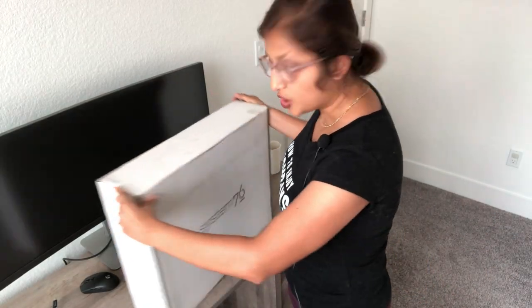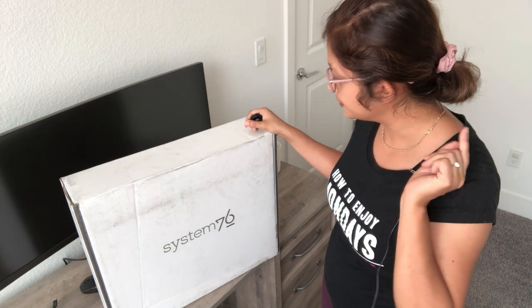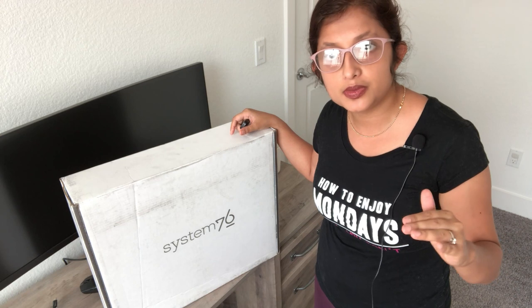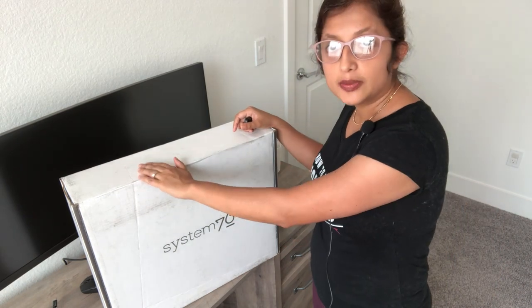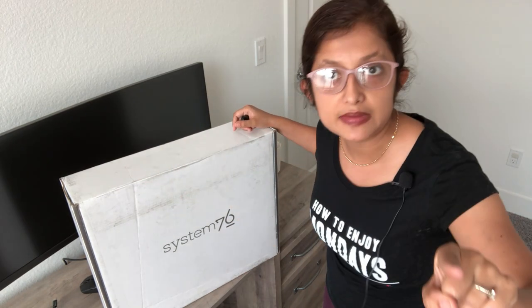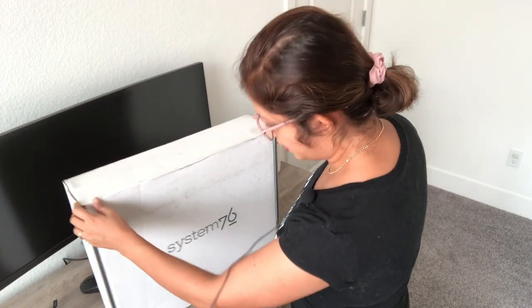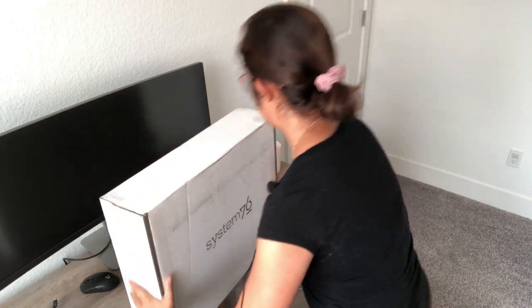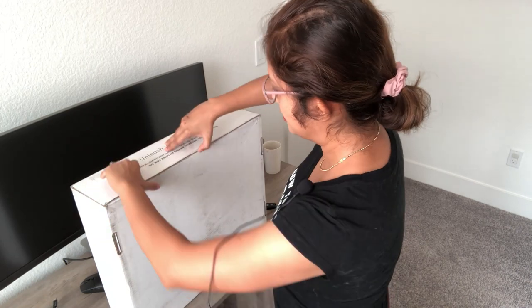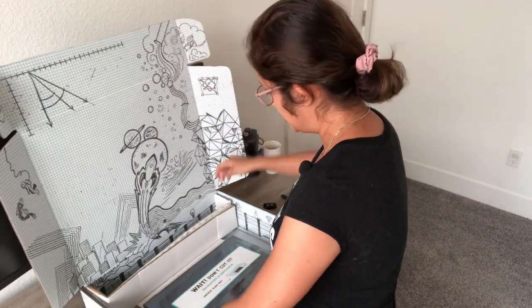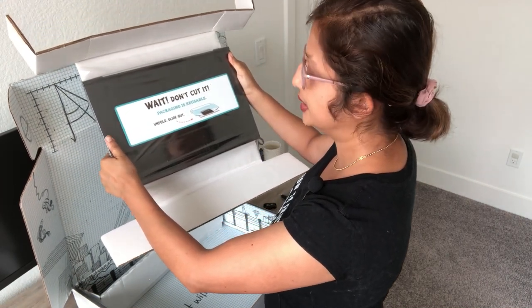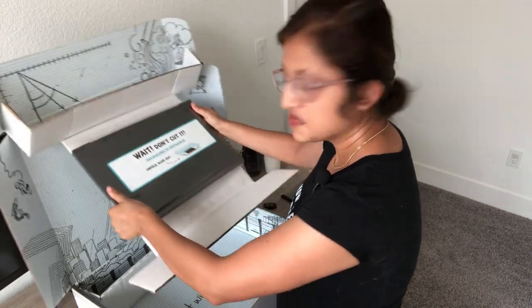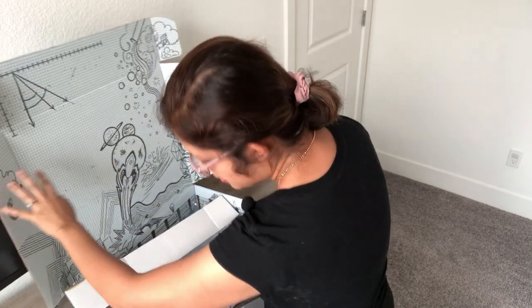This is the computer I was talking about — it's the System76 PC. It's one of the top rated Ubuntu systems, and I'll share the specs in a minute. I have the box right here and I have not opened it before — this is the first time I'm doing an unboxing video, so please bear with me. All I've done so far is rip off the sellotape. At the bottom it says 'wait, don't cut it — the packaging is reusable,' so I'm supposed to unfold it and slide it out.